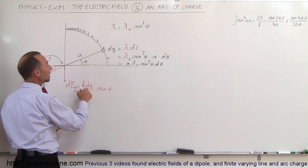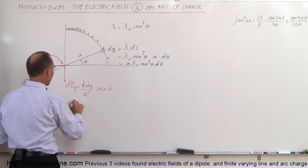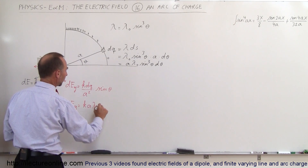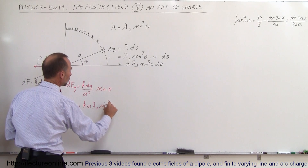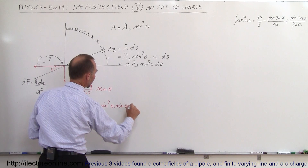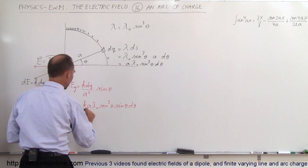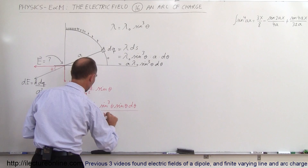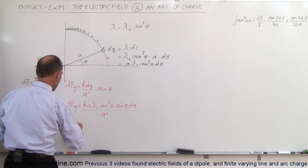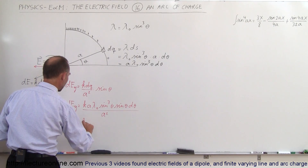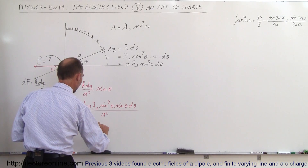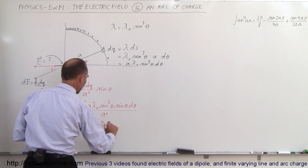Since dq can be expressed as a·λ₀·sin³(θ)·dθ, the dE in the y direction becomes k times a·λ₀·sin³(θ)·sin(θ)·dθ all divided by a squared. The a cancels, and combining the sines gives dEy = (k·λ₀/a)·sin⁴(θ)·dθ.